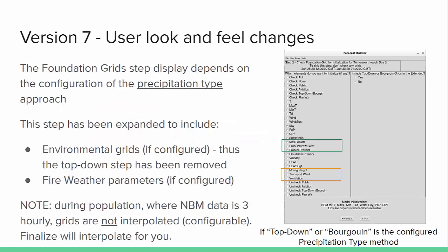Here are some of the user look and feel changes. The foundation grid step is probably the one with the biggest amount of change, and how it looks is going to depend on the configuration of the precipitation type approach. What I've shown here on the right is an example of the top-down Burgoyne configured for the precip type method. You can see the P-type approach referenced here with Max Wepable Loft, Prob Refreeze, and Prob Ice Present. This step has been expanded to include the environmental grids as well as the fire weather parameters, both of which depend on how Forecast Builder is configured. Note that during population, where the MBM data is three-hourly, the grids are not interpolated by default — that is configurable.